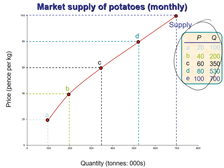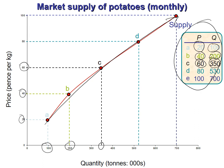When we plot the market schedule on a graph: at price 20, quantity is 100; at price 40, quantity is 200; at price 60, quantity is 350. Plotting all of these points gives us the market supply curve. It's straightforward — look at the schedule and plot your curve.